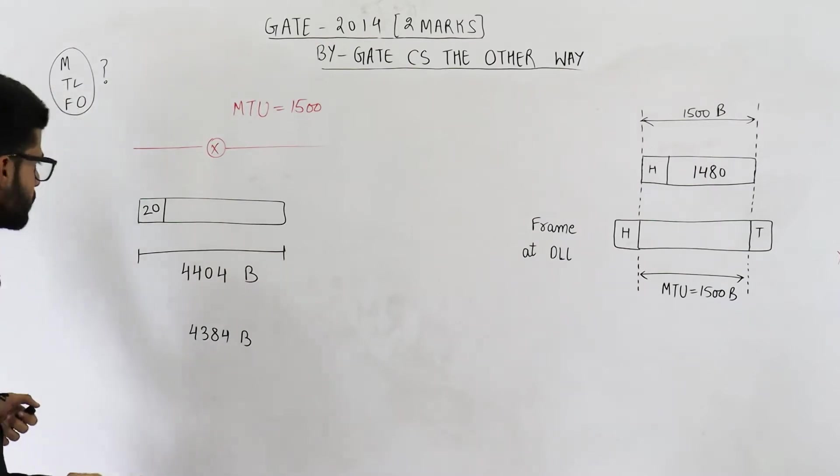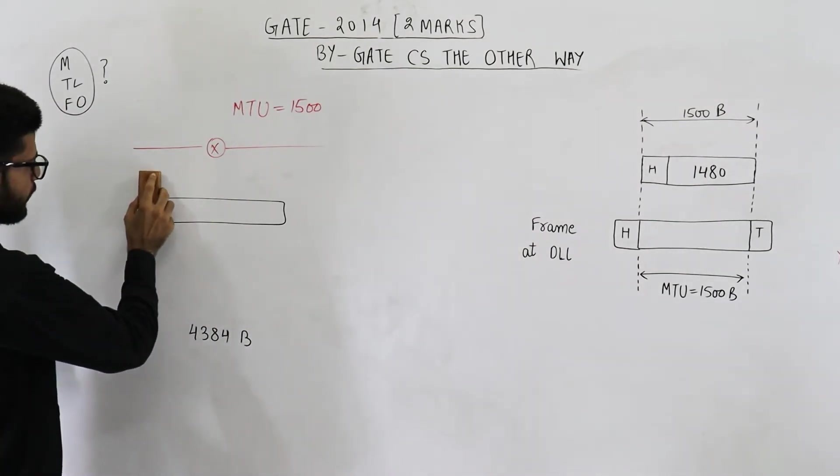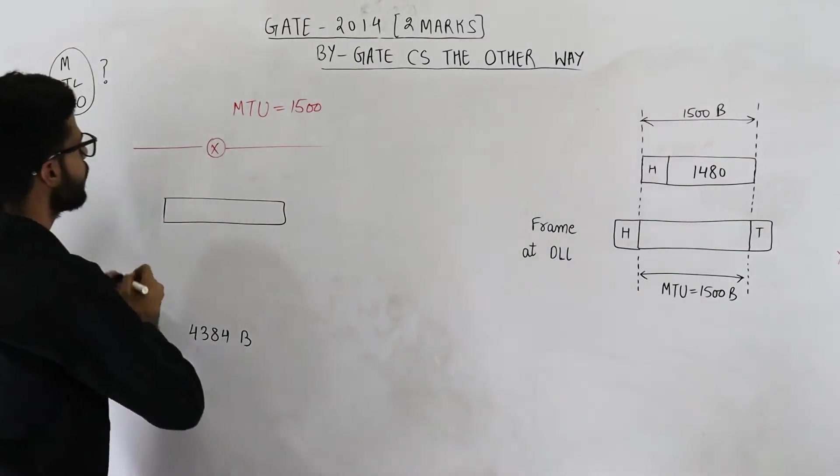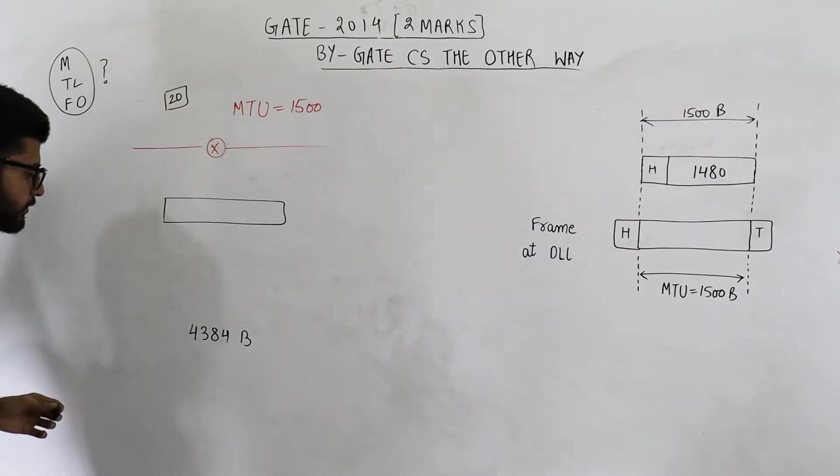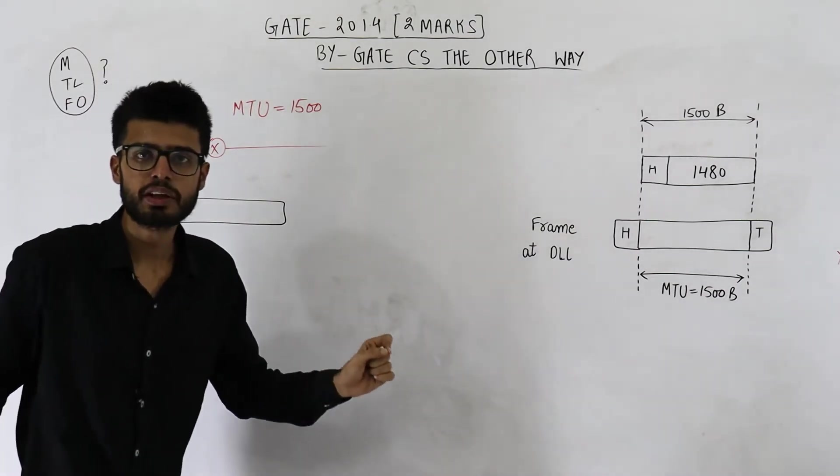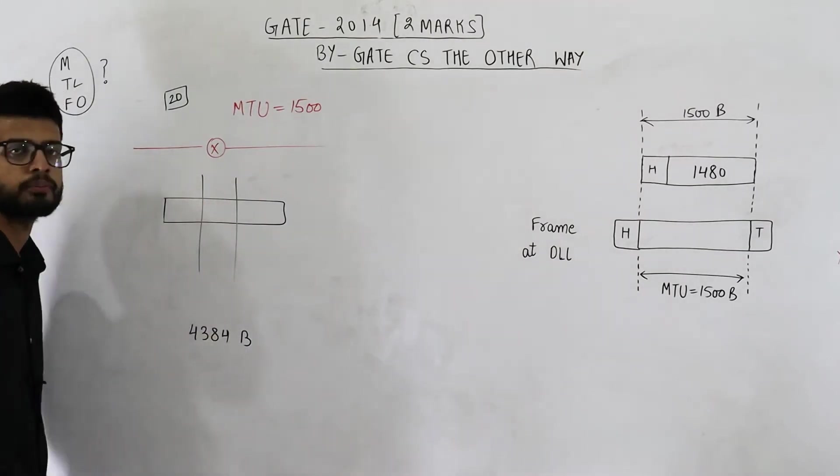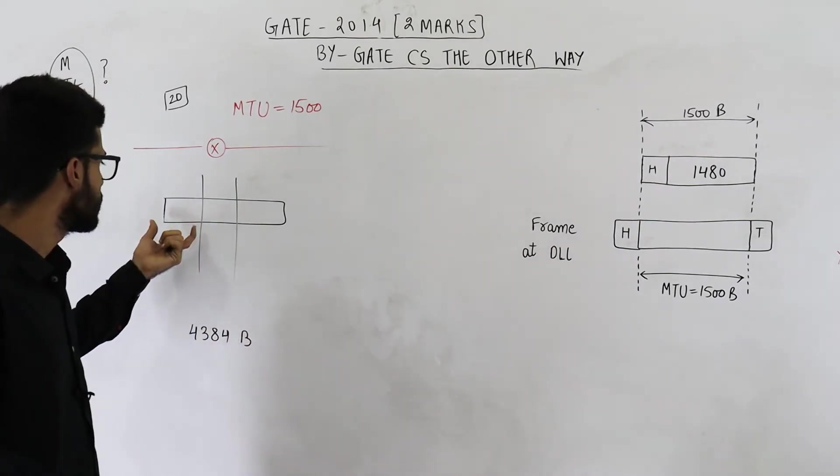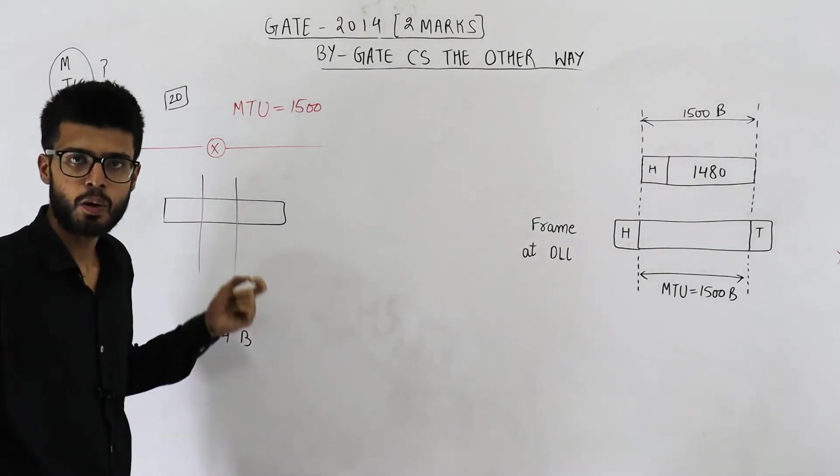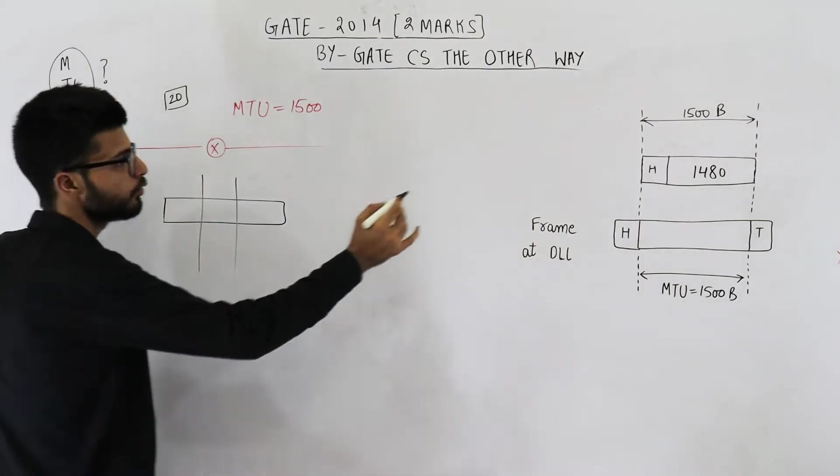For fragmentation, step 1 is just remove the IP header. This 20 bytes of header will be removed and it will be saved in some buffer memory. The header is saved. Now we are going to create smaller parts of data like this. So these are called fragments.